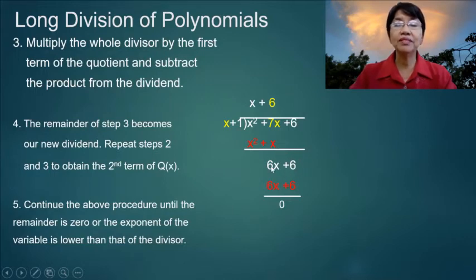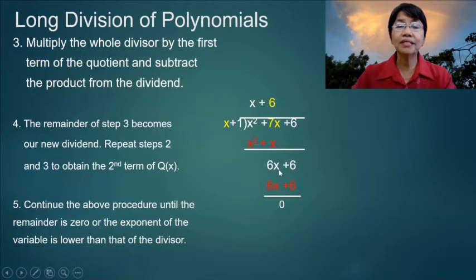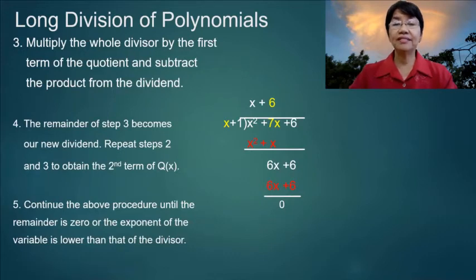We start dividing again: 6x divided by x equals 6. Then 6 times x equals 6x, and 6 times 1 equals 6. We subtract this from 6x plus 6 above, and we get 0, which means the division is exact — there is no remainder.